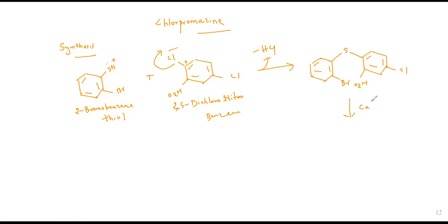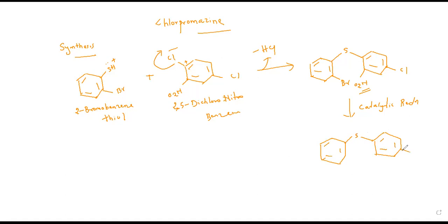This intermediate compound is now subjected to catalytic reduction. Reduction is the removal of oxygen and addition of hydrogen atoms. The nitro group undergoes a reduction process to convert into the corresponding amine, giving an aromatic ring structure with sulfur fused with another aromatic ring bearing a chlorine atom, bromine, and the nitro compound converted to an amine NH2.